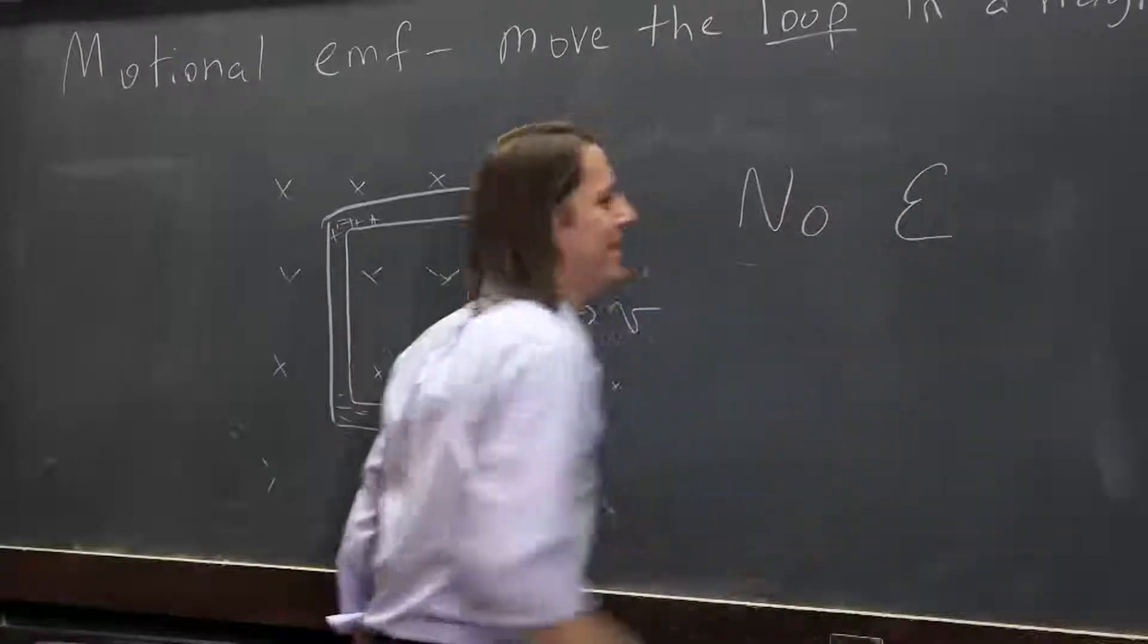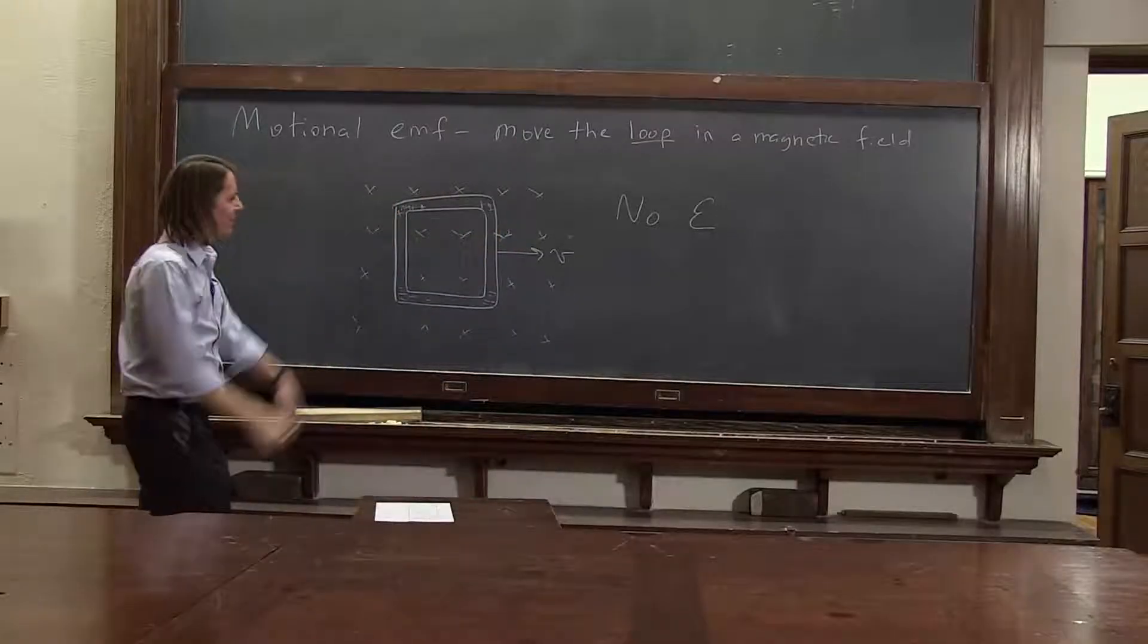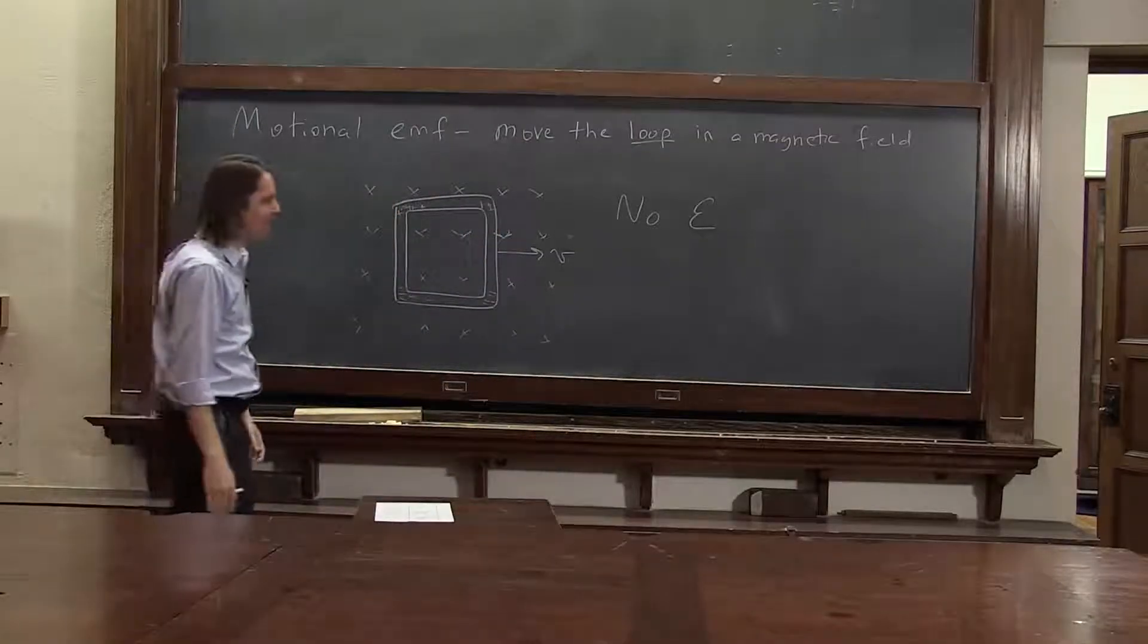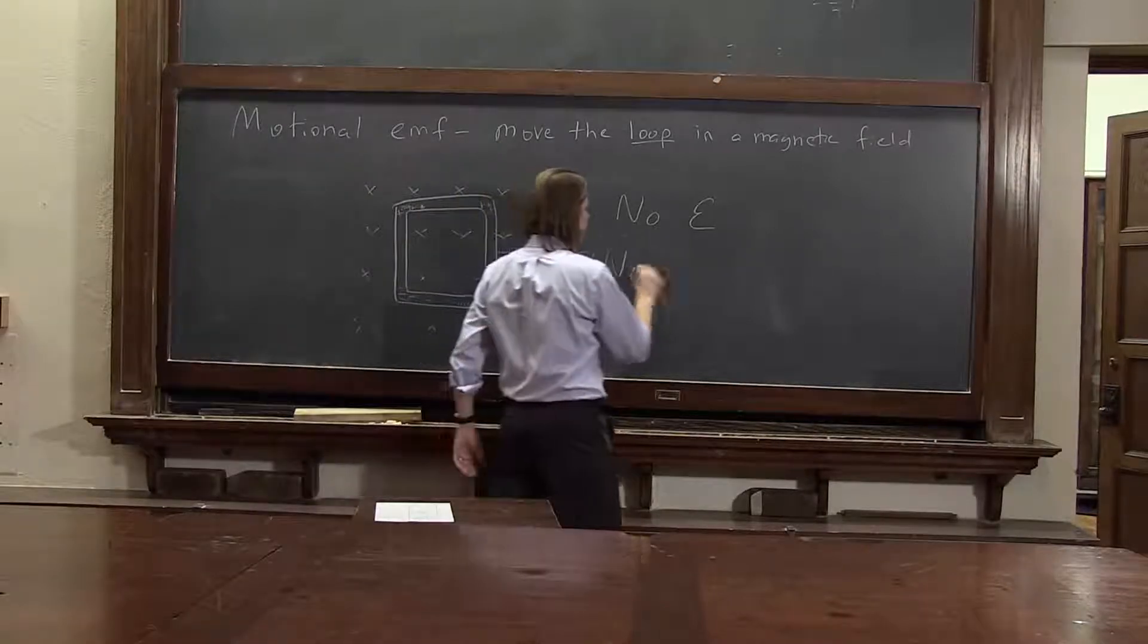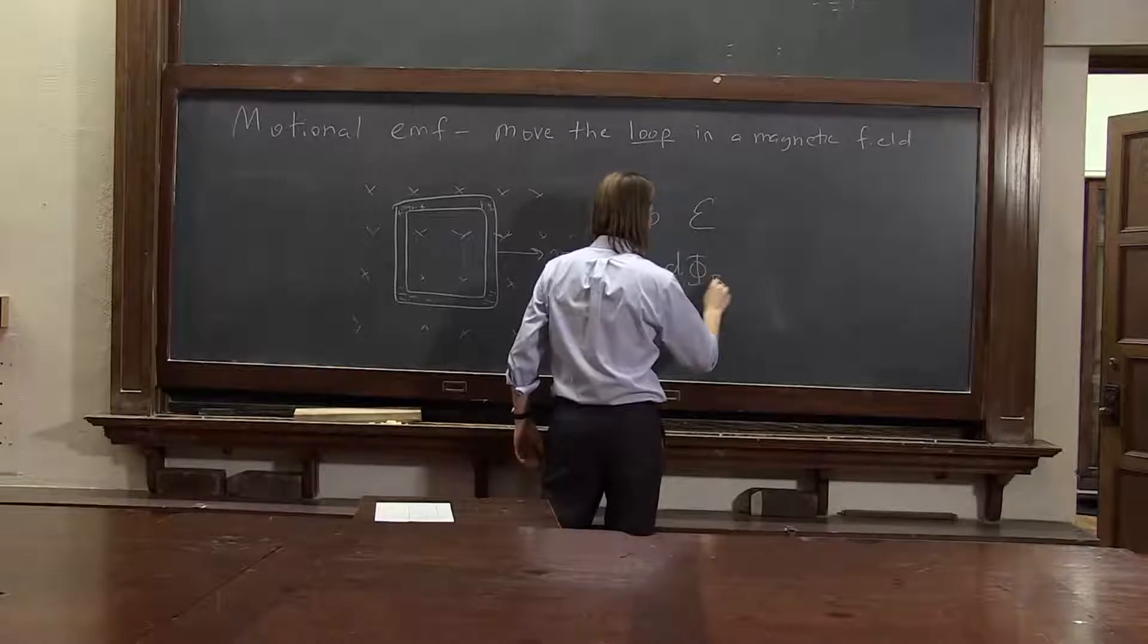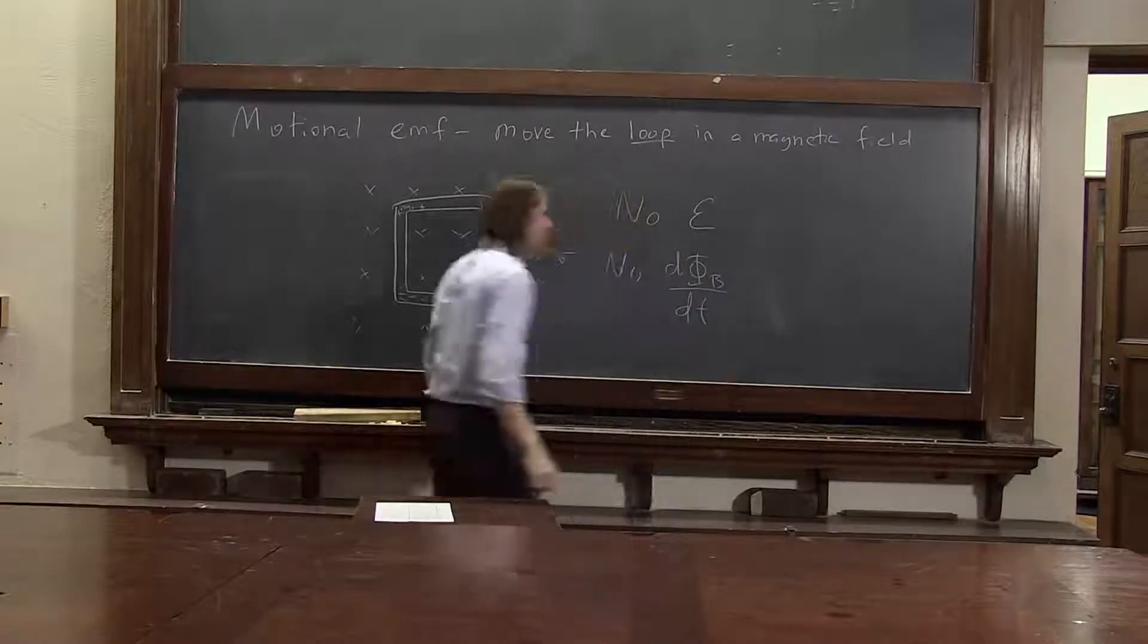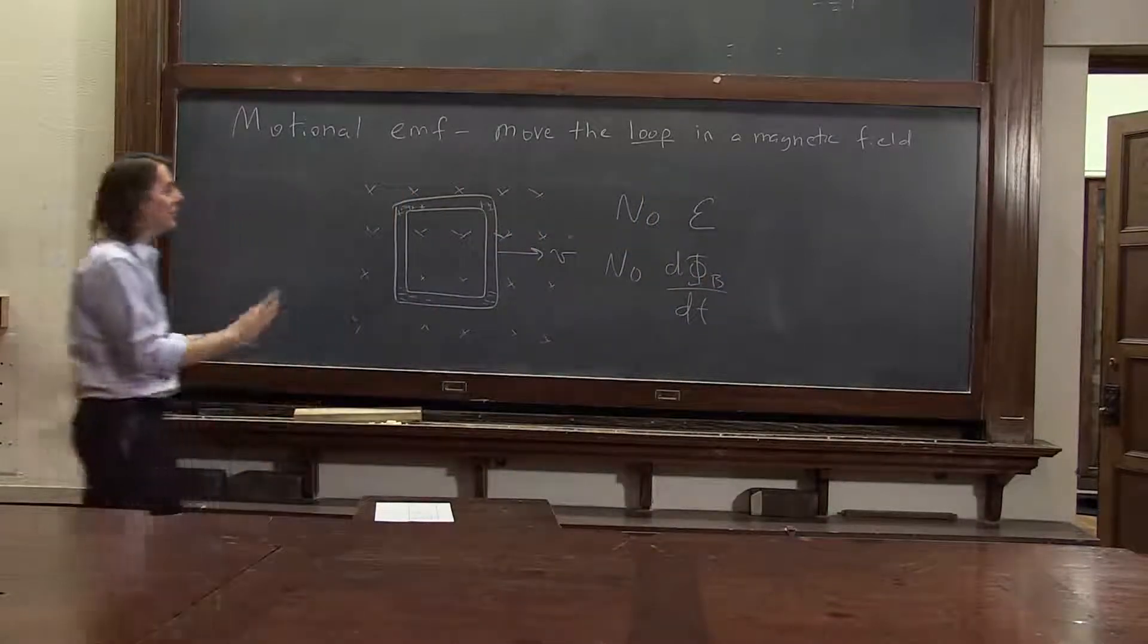There's no EMF yet. I messed up again. All this is going to do is polarize this object. There's no EMF. Wait a minute, look. There's no dΦ_B/dt. So there better not be an EMF. OK, let me try it one more time.